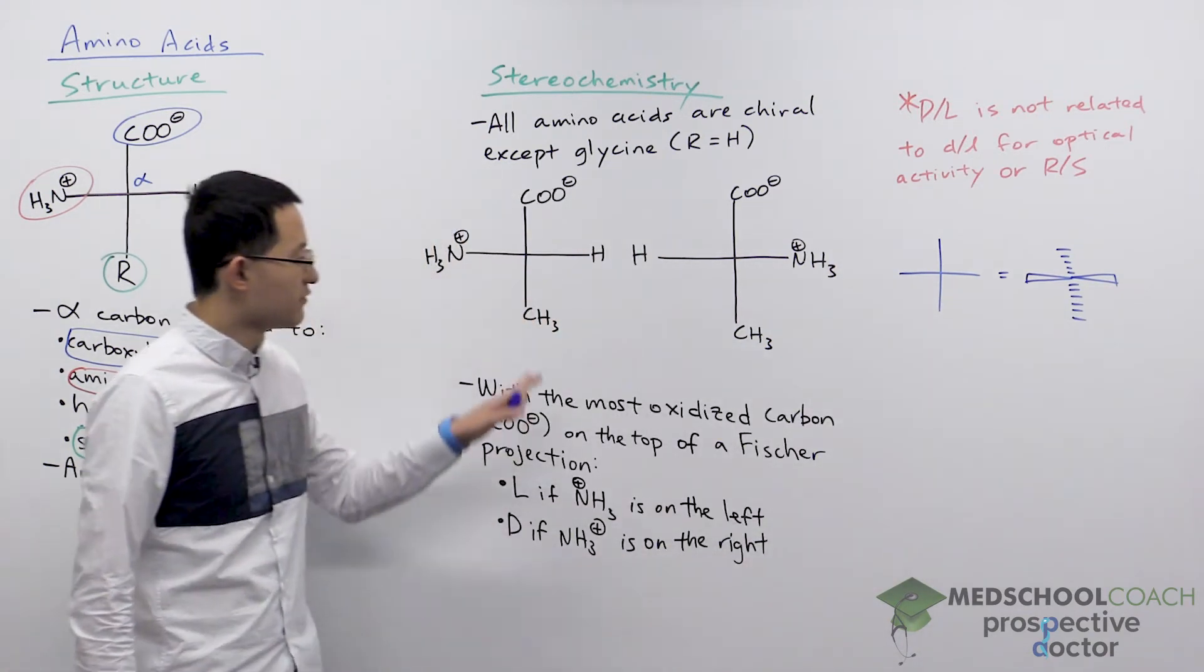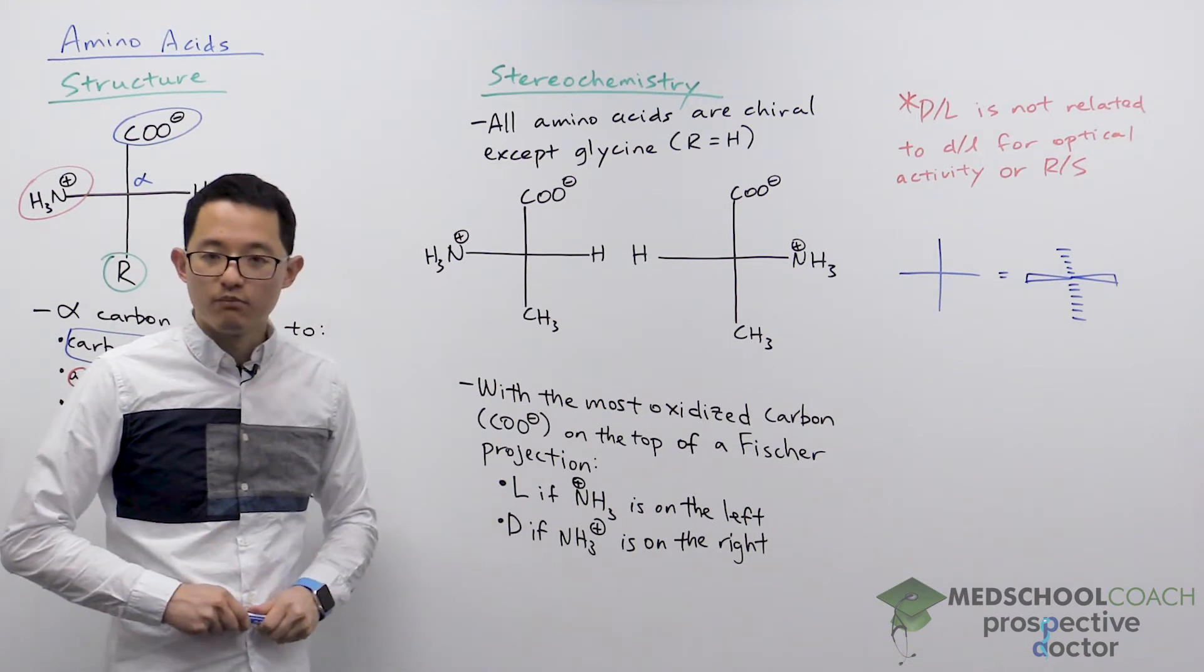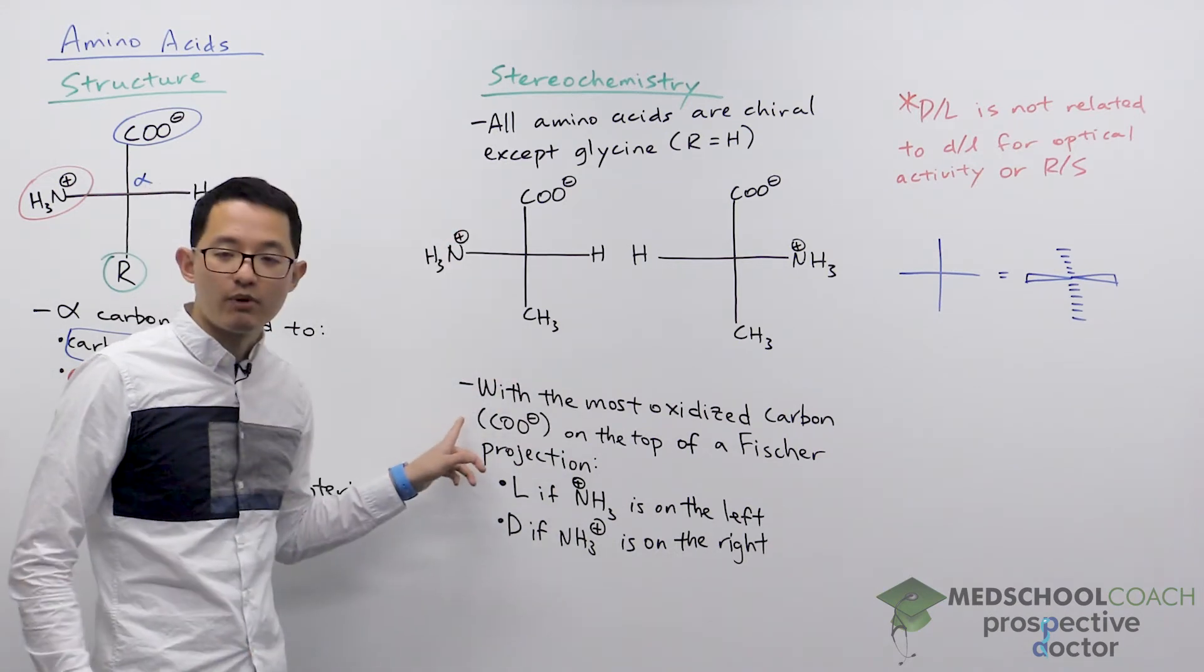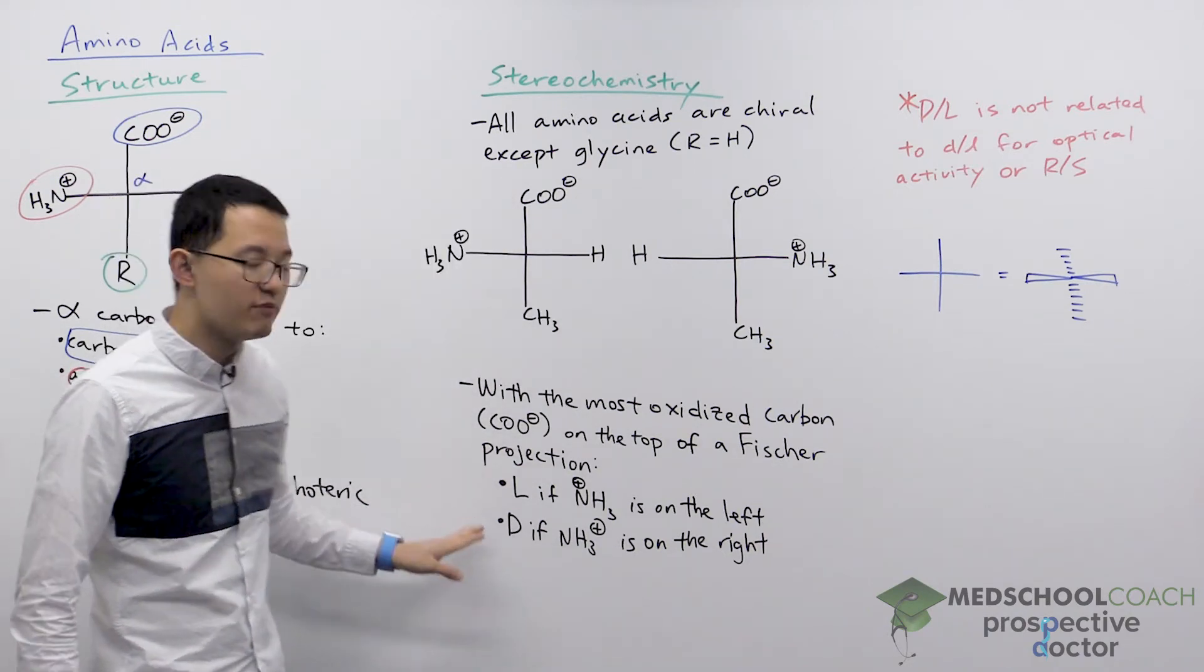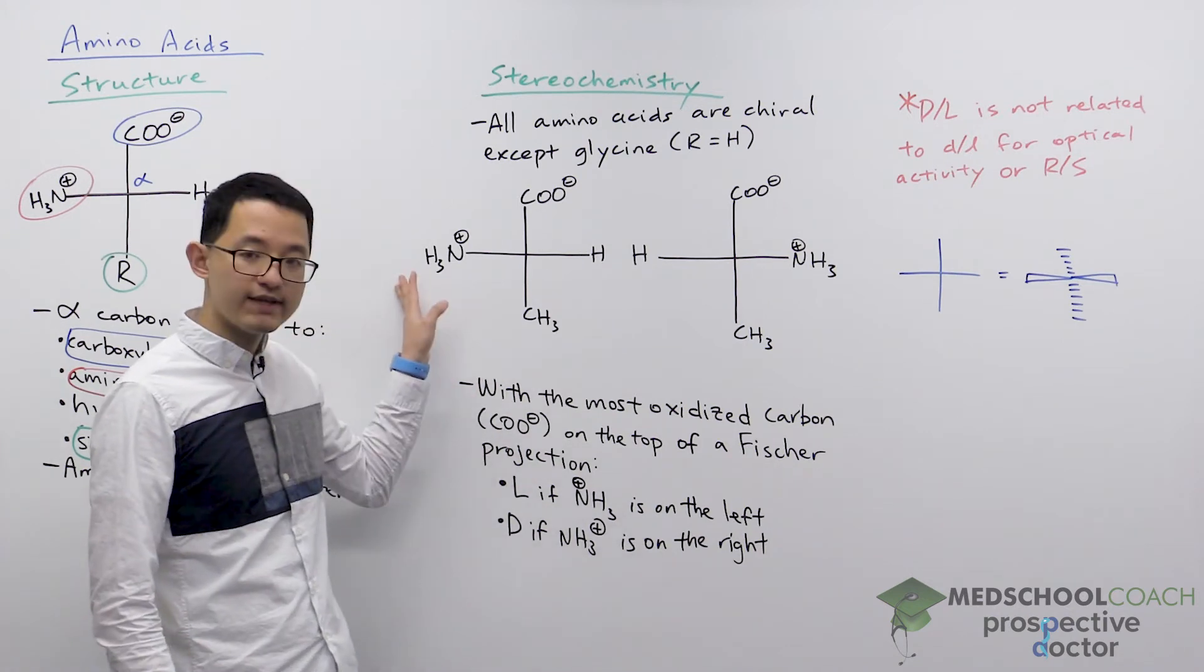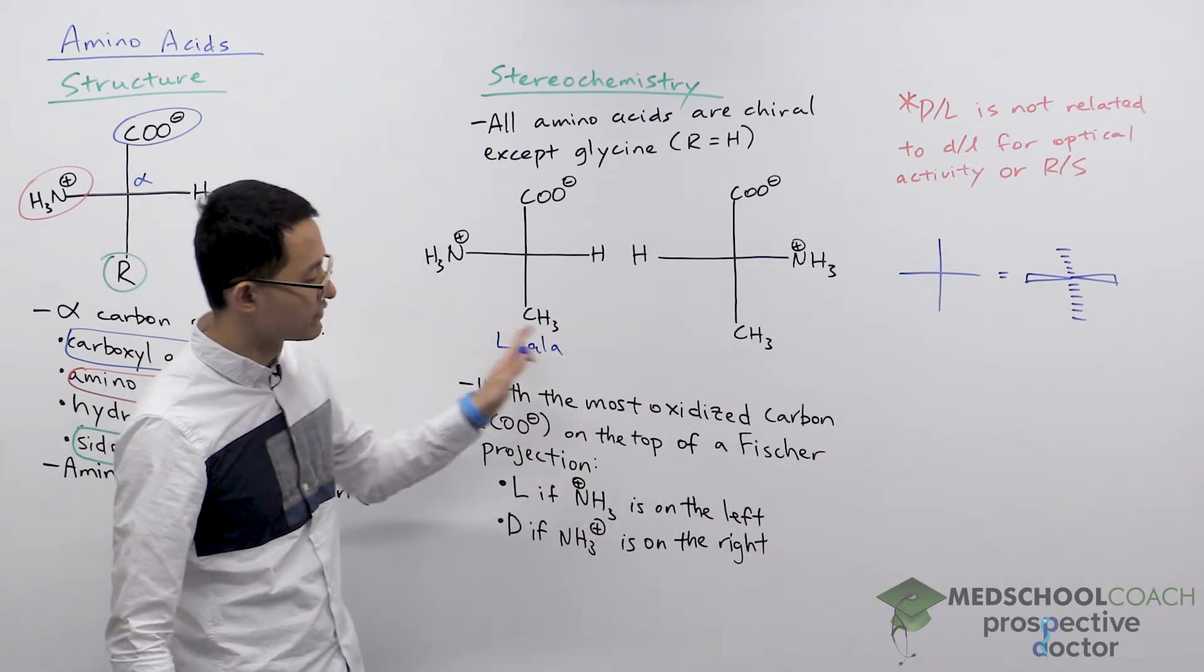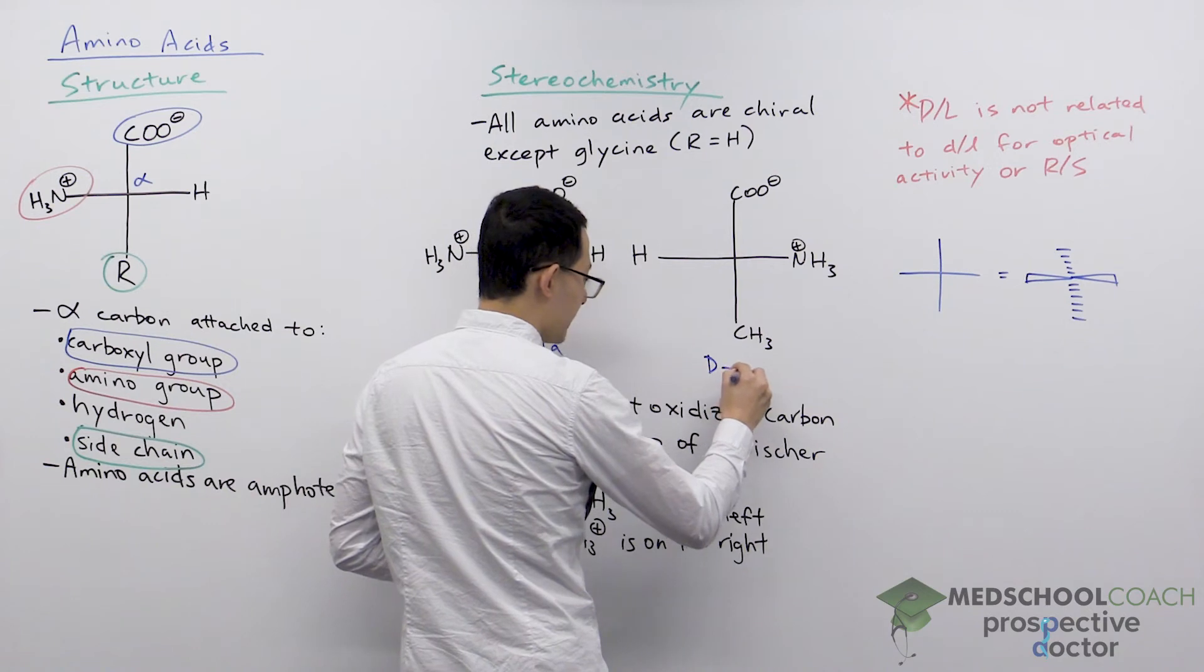When your amino acid is drawn in the Fischer projection you want to orient the molecule such that the most oxidized carbon is placed on the top which is the carboxyl group. When the carboxyl group is placed on the top you then want to look at the position of the amino group. If the amino group is facing the left then you have the L amino acid. If the amino group is facing the right then you have the D amino acid.